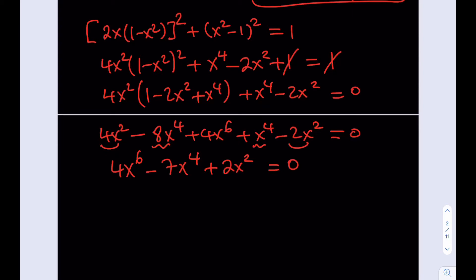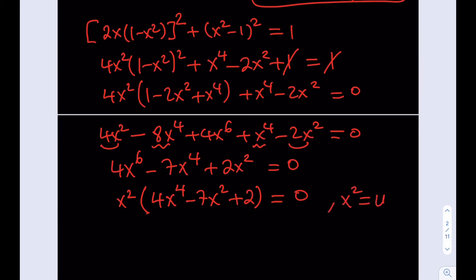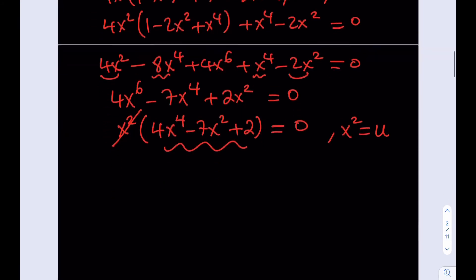We can factor out x², giving x²(4x⁴ − 7x² + 2) = 0. This is a quartic with no cubic or linear terms — a biquadratic. Since x = 0 is not the solution we want, we use the substitution u = x² to get the quadratic: 4u² − 7u + 2 = 0.